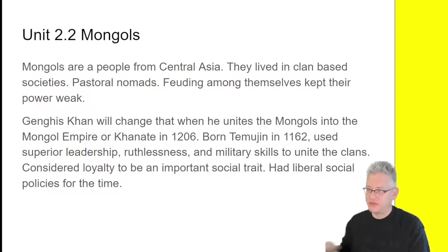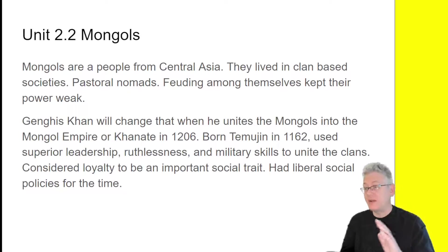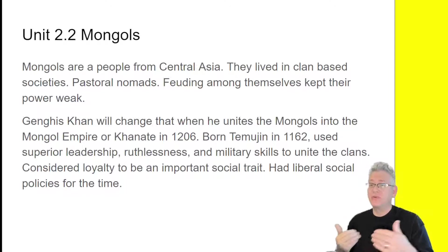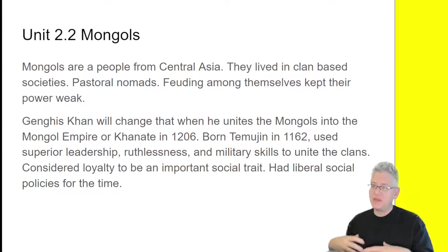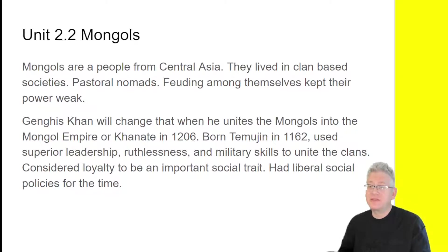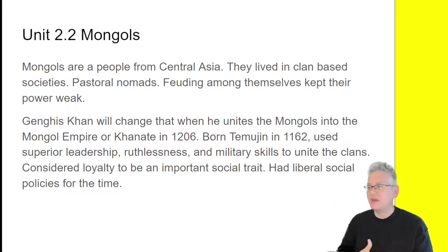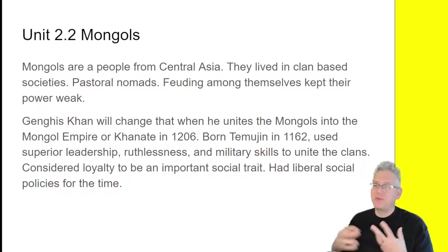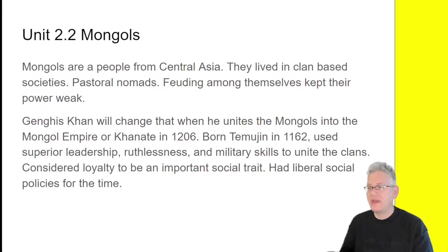Let's shift gears to the Mongols — this is our section 2.2. Mongols are people from Central Asia. Prior to Genghis Khan, they lived in clan-based societies and were pastoral nomads. They would have animals — primarily yaks and horses — that they moved from place to place, staying in a location until resources were used up, then moving on. Once the game was gone, the grass chewed up by the animals, you'd pick everything up, put it on the animals, and move to a new location. They also did a lot of trading with more civilized areas. One problem was that they feuded amongst themselves constantly, which kept their power very weak.